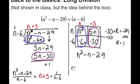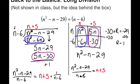So I state my answer: n squared minus n minus 29 over n minus 6 is equal to n plus 5 plus 1 over n minus 6. You can see I actually get the same answer whether I do long division or whether I do the box method. I encourage you to use whichever one you want, but going forward in this video I'm going to be focusing on the box method.